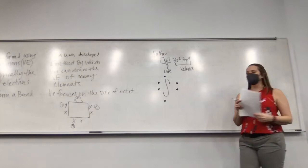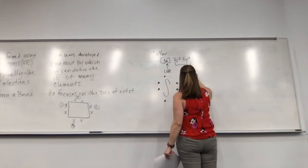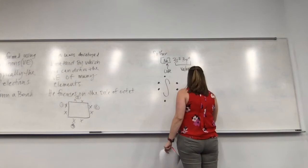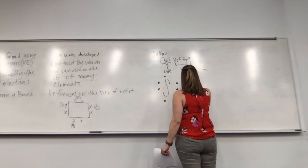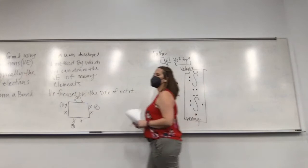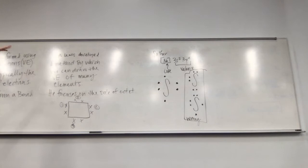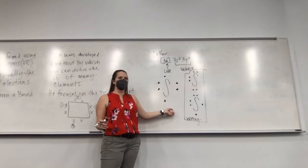Here are some wrong options — I'll put a box around these. These are wrong; they do not follow the Lewis dot structure rules. The top wrong structure has all six electrons in pairs with an empty side. The bottom wrong structure has electrons that are not as far apart as possible.